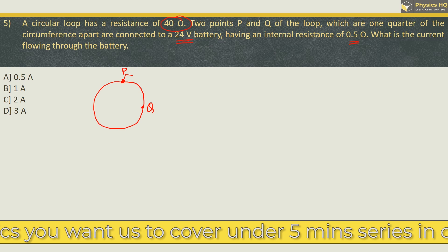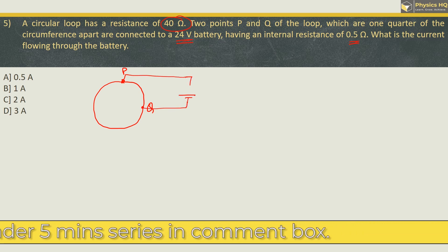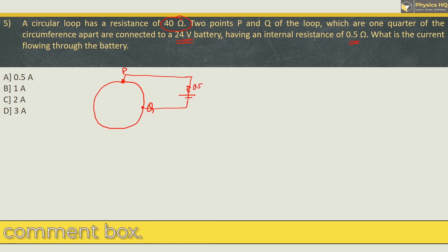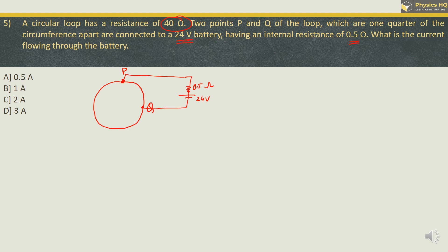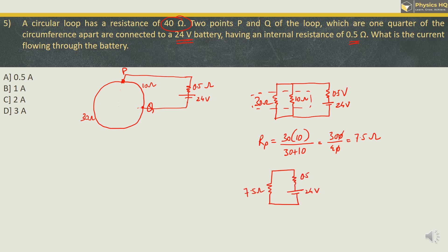Now they have connected a battery of 24 volt over here, and this battery has some resistance of 0.5 Ohm over here. Now the entire length of this loop is having resistance 40, so 1 fourth of it will be having resistance 10 Ohm, and the other 3 fourth will be having resistance 30 Ohm. So I can redraw the circuit as 30 Ohm connected in parallel with 10 Ohm, and we have a 0.5 Ohm resistance over here with 24 volt battery source. We will find out the parallel equivalent of this. So parallel equivalent will be equal to, short cut is multiply the 2, 30 into 10, and add the 2 in the denominator, 30 plus 10. So this is equal to 300 by 40. 00 is cancelled and 30 by 4 will be 7.5 Ohm.